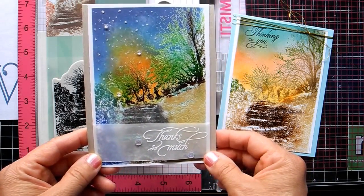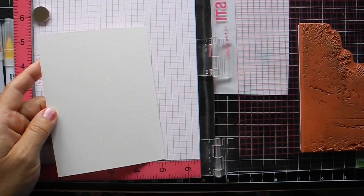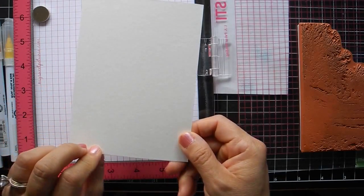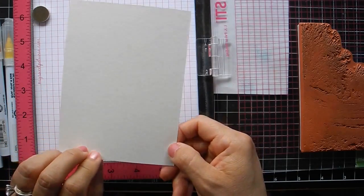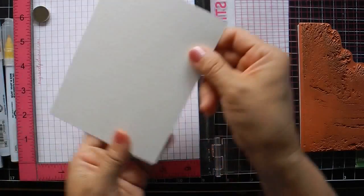So today we're going to do a watercolor version. First, I cut a piece of cardstock from Canson watercolor paper, 140 pounds, and I'm using the smooth side up.